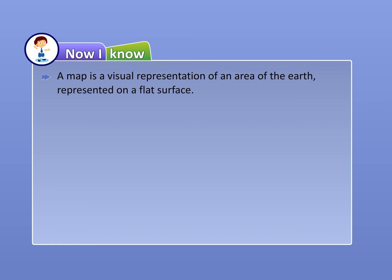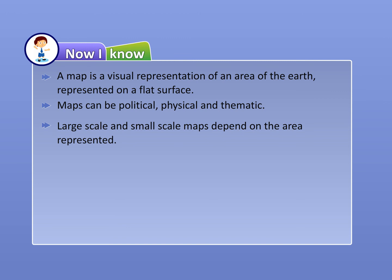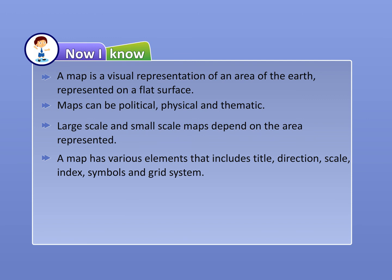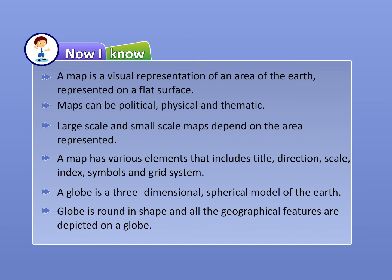Now I know! A map is a visual representation of an area of the earth represented on a flat surface. Maps can be political, physical, and thematic. Large scale and small scale maps depend on the area represented. A map has various elements that include title, direction, scale, index, symbols, and grid system. A globe is a three-dimensional spherical model of the earth — round in shape, with all geographical features depicted on it.